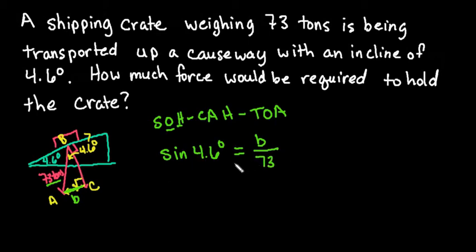So now all we have to do is take our calculator. To get B by itself, we would just say that B equals 73 times the sine of 4.6.